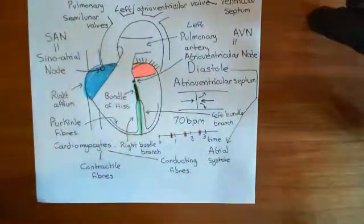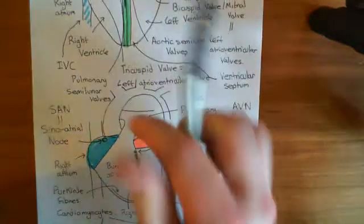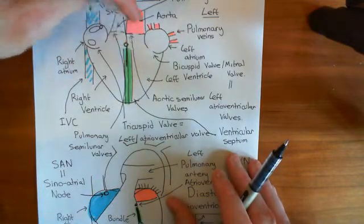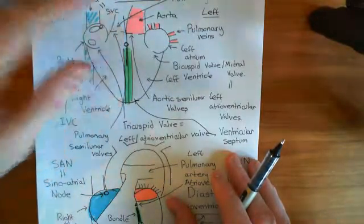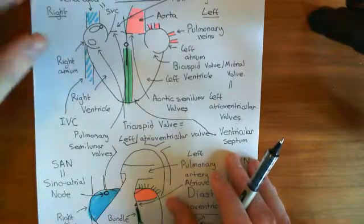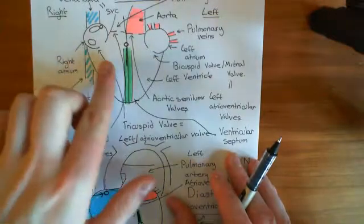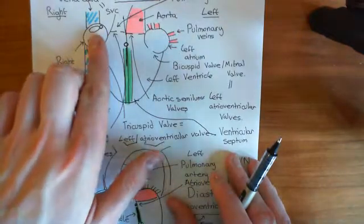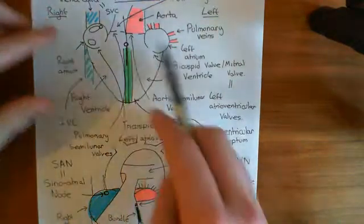The semilunar valves of the aorta and the pulmonary trunk open, because they are a one-way system — they easily allow blood to push them open in the correct direction but not in the reverse direction. So when blood needs to be ejected from the ventricles, the semilunar valves open and allow blood to move out. Meanwhile, the tricuspid and bicuspid valves close, preventing blood from flowing back into the atria.